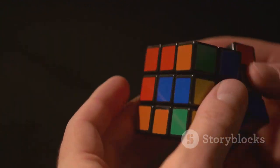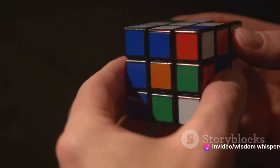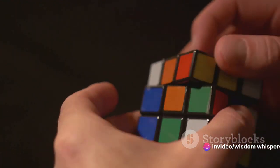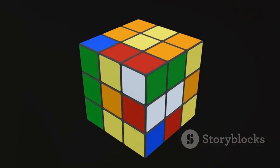The center pieces are the heart of the cube. They are stationary and dictate the color of each side. So when you're solving, remember the center pieces are your guide. They're your north star, never moving, always reliable.